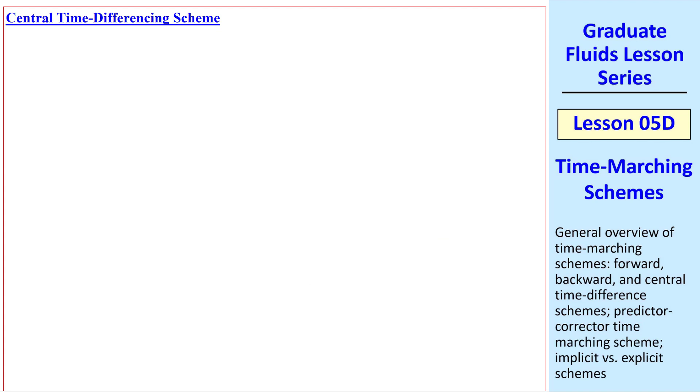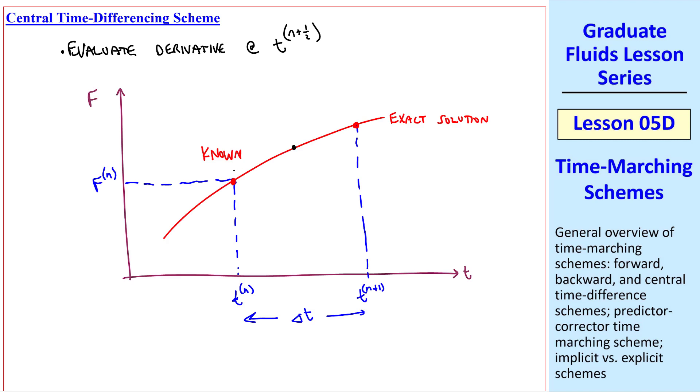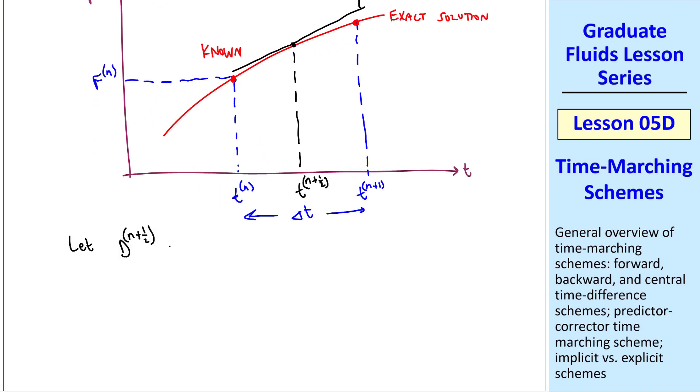We can combine the previous two schemes into what's called a central time differencing scheme, where you evaluate the derivative at the halfway point, which we'll call tn plus 1 half. Again, graphically, our goal is to take the derivative in the middle point, tn plus 1 half. We'll call this slope dn plus 1 half, evaluated at tn plus 1 half. Mathematically, we let dn plus 1 half equal dn plus dn plus 1 over 2. In other words, the average of the slope here and the slope here. Then fn plus 1 is fn plus dn plus 1 half delta t.